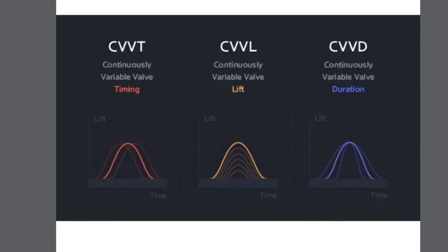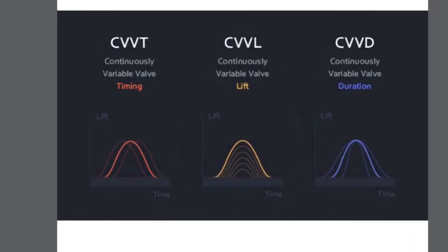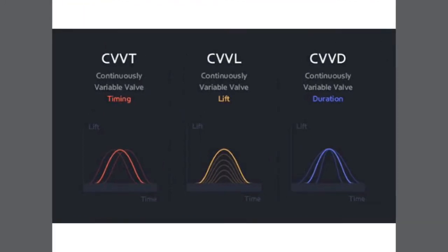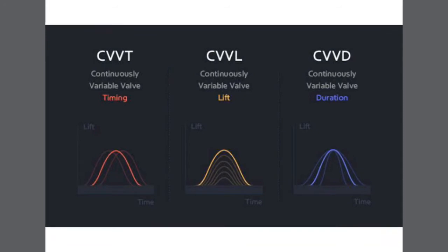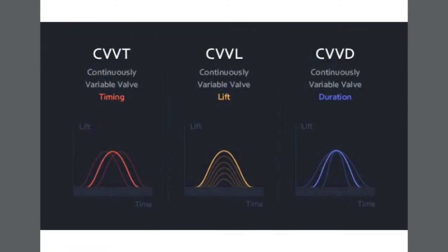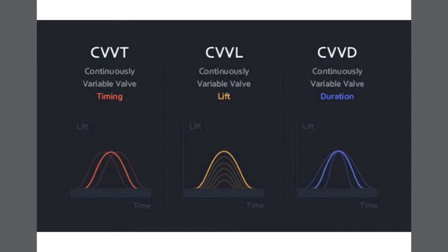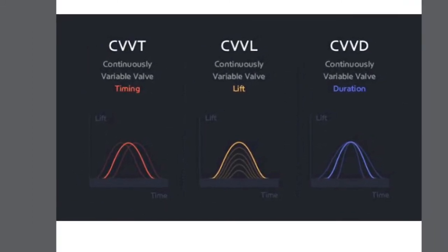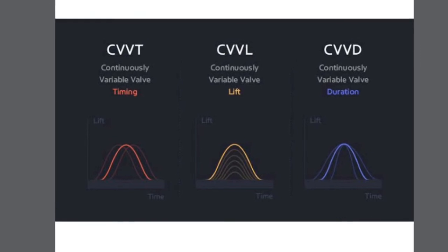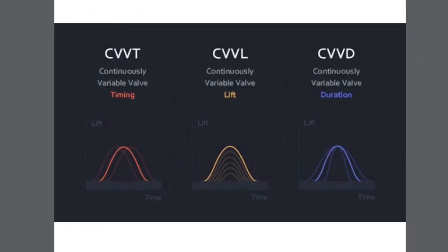There are three types of valve operation: VVT, which is variable valve timing; VVL, which is variable valve lift; and VVD, which is variable valve duration. If we are able to change these three for every change in the RPM range, there will be continuously variable valve timing, continuously variable valve lift, and continuously variable valve duration.